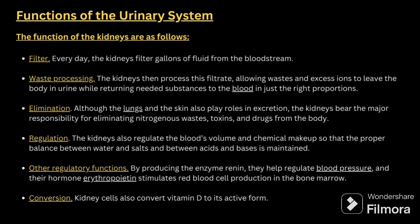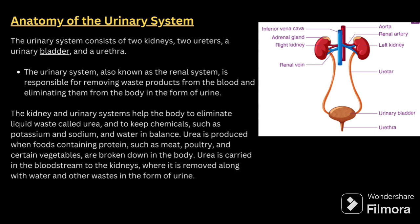The urinary system consists of two kidneys, two ureters, a urinary bladder, and a urethra. It is also known as the renal system, which is responsible for removing waste products from the blood and eliminating them in the form of urine. The kidneys help the body eliminate liquid waste called urea and keep chemicals such as potassium, sodium, and water in balance. Urea is produced when proteins from meat, poultry, and certain vegetables are broken down in the body.